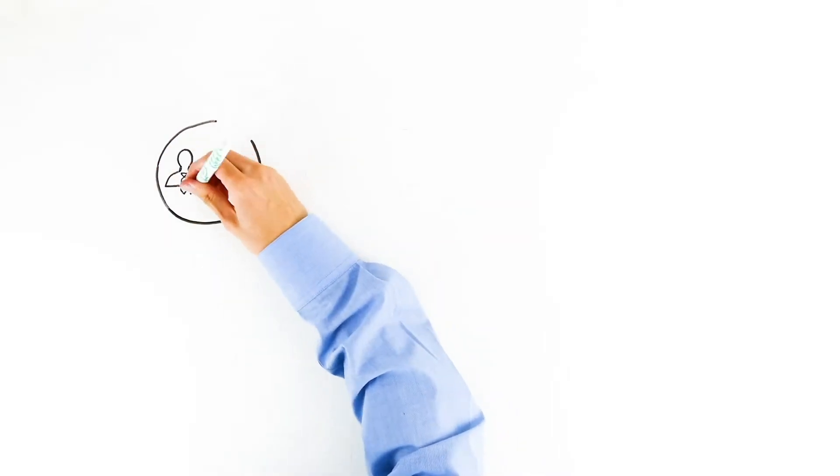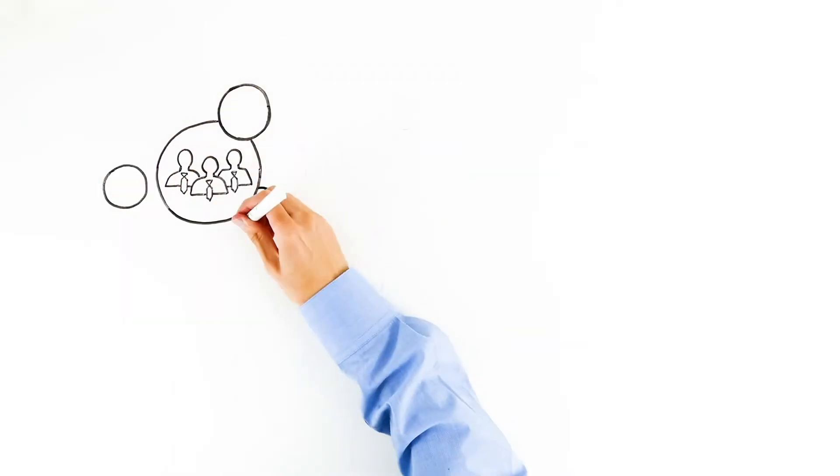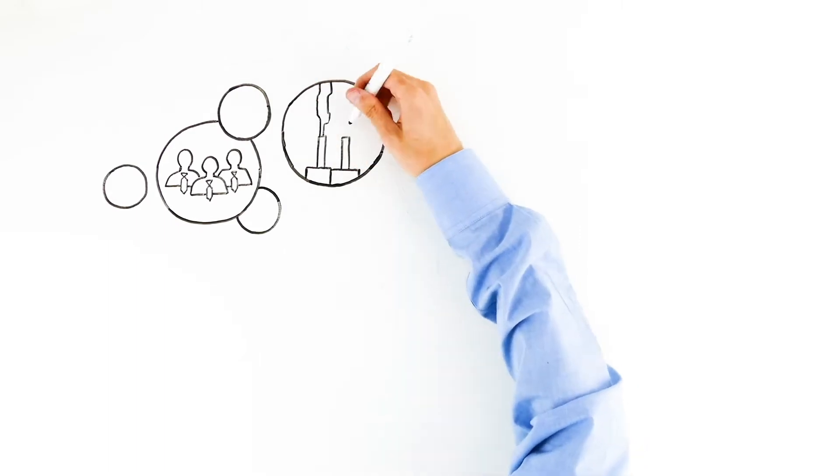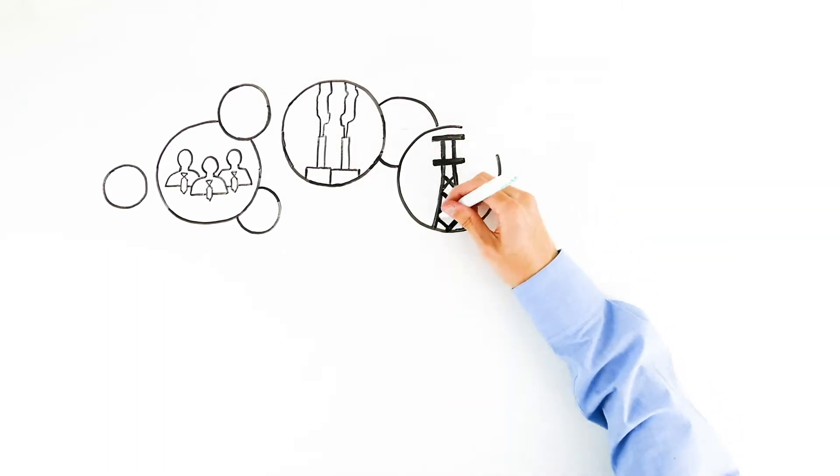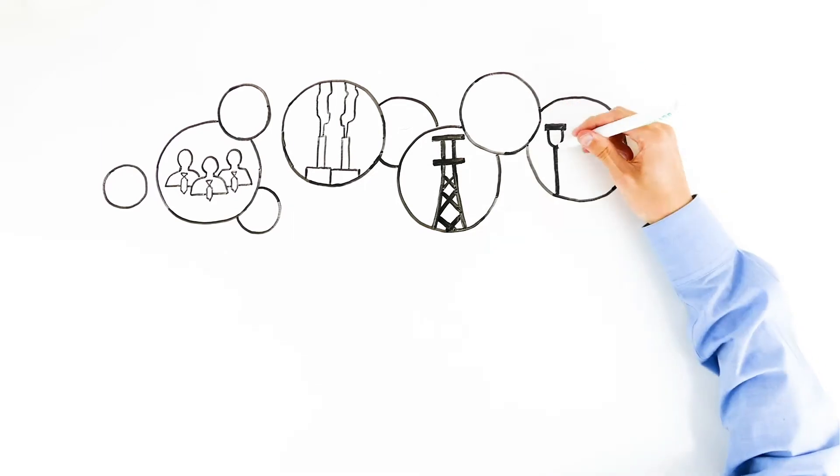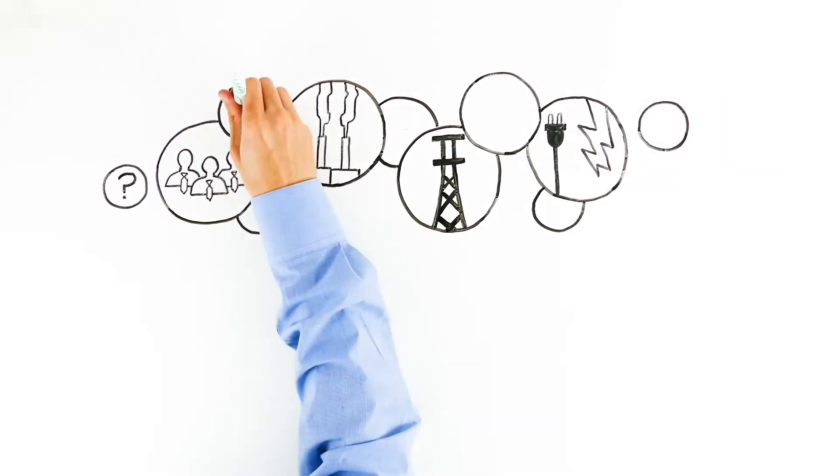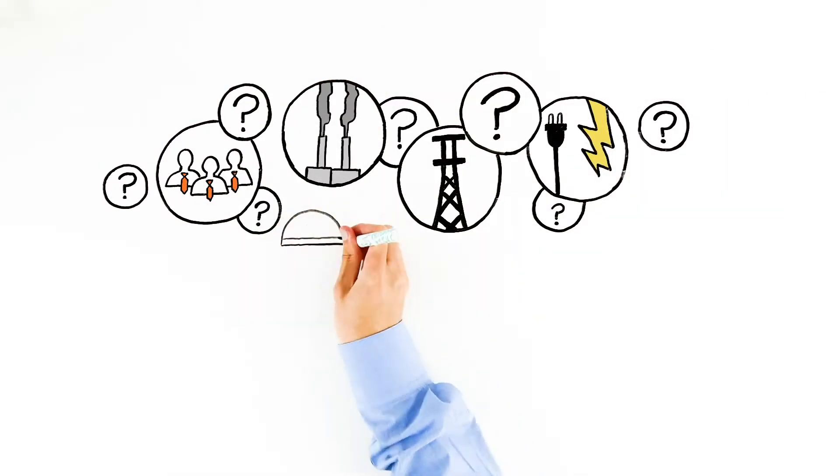The electrical power industry is a complicated mix of stakeholders, including independent power producers, large utility grids, and smaller municipal and cooperative utilities. And all these different systems and participants add complication to the electrical ecosystem.